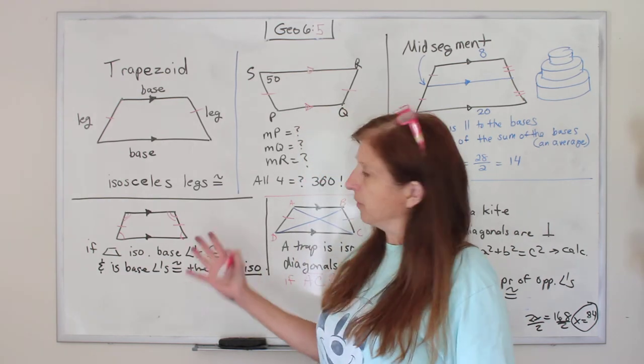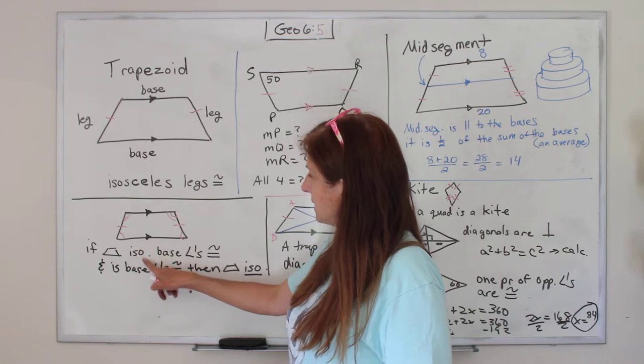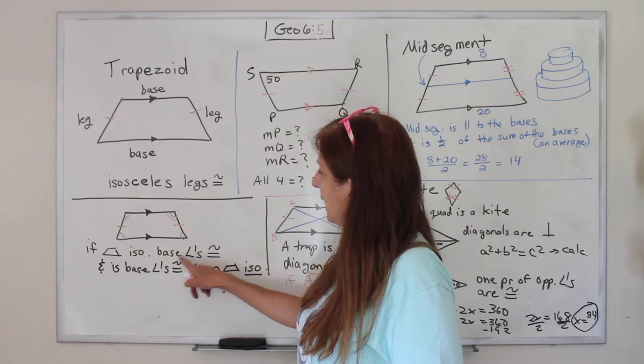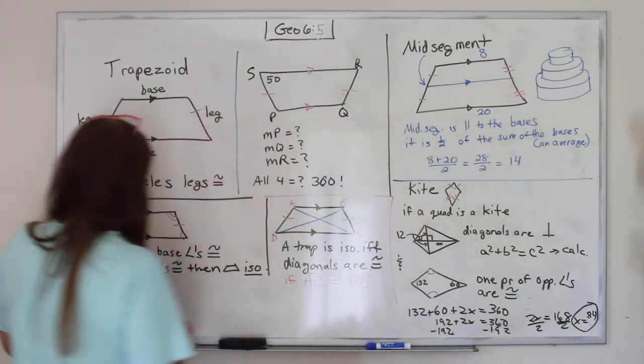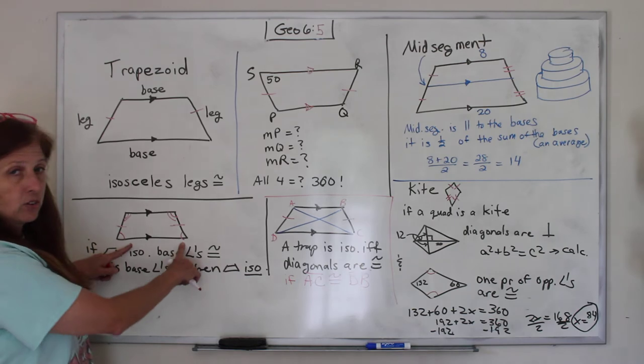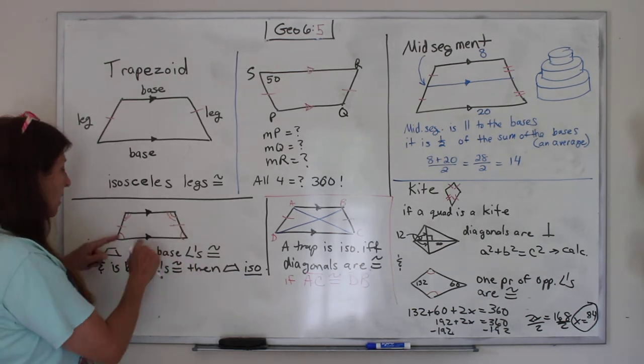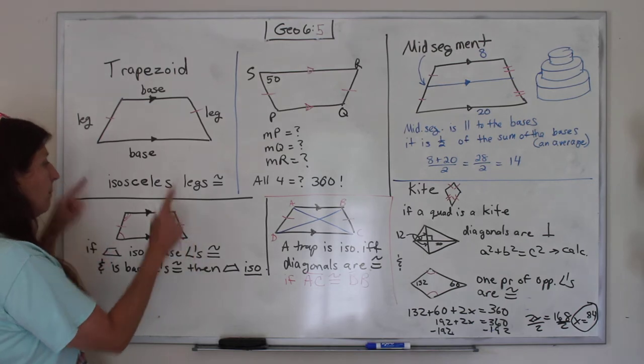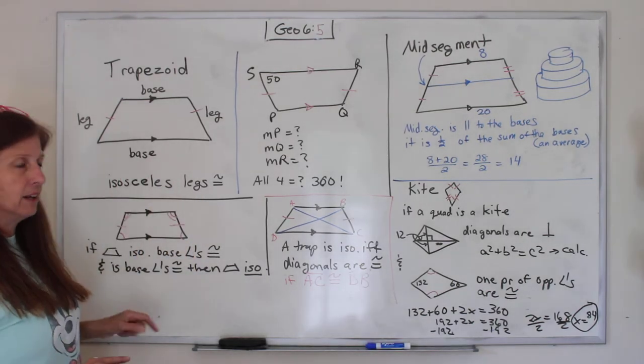Now, here's a theorem. If a trapezoid is isosceles, then the base angles are congruent. So that means if these are the same, then these two angles will be the same and those two angles will be the same on each other. Like these two are the same, but they're not the same as those, because then that wouldn't be a trapezoid anymore.